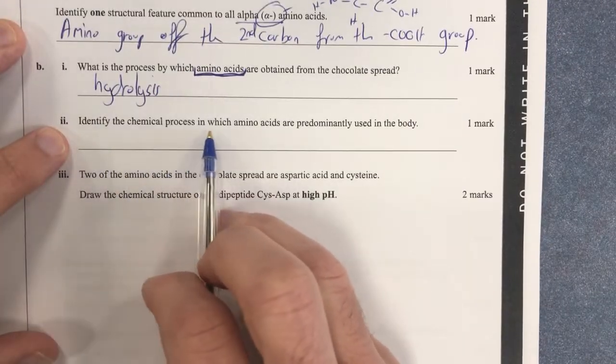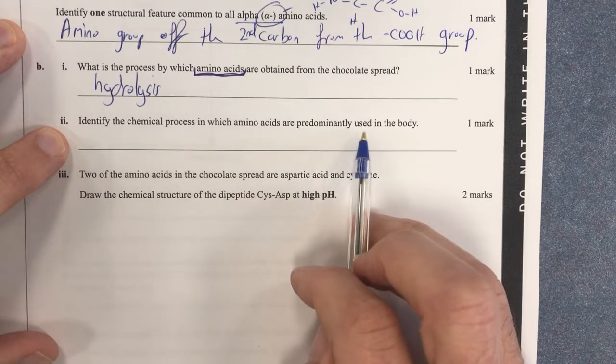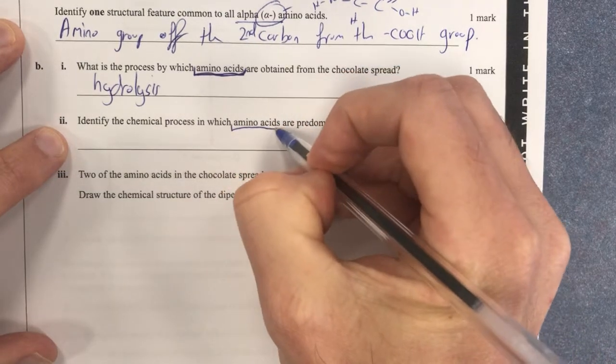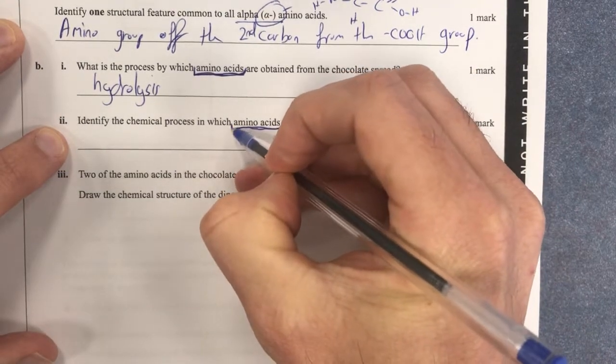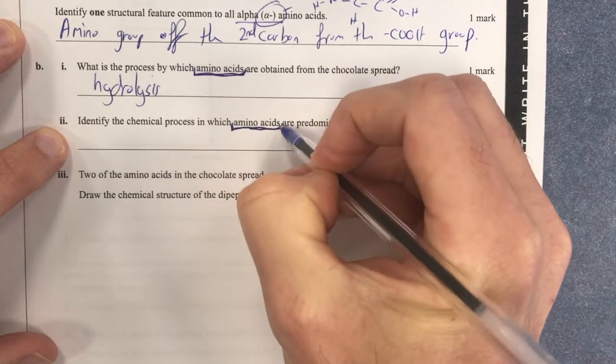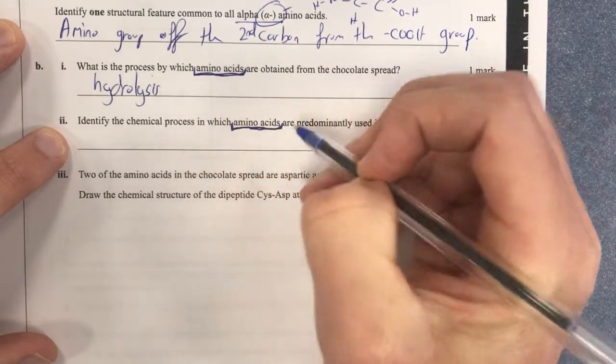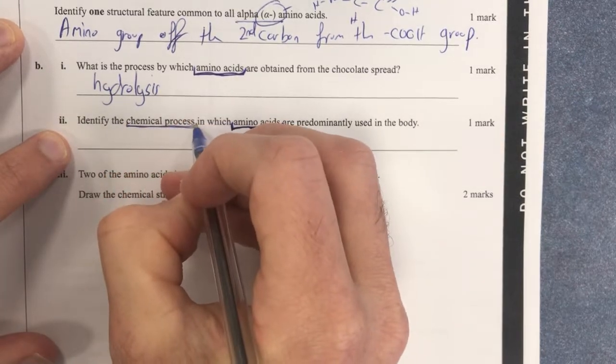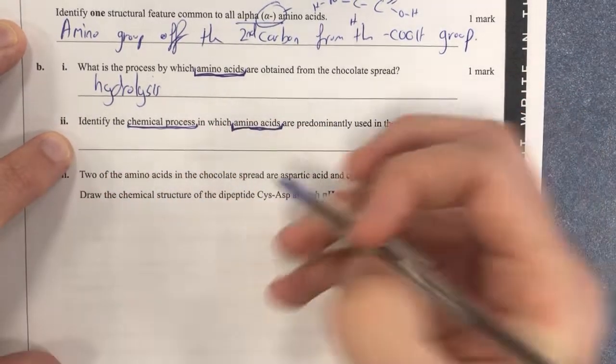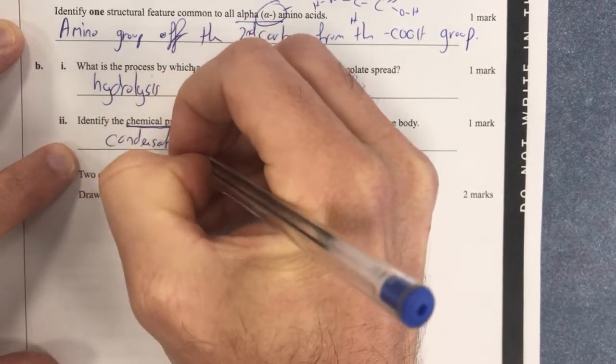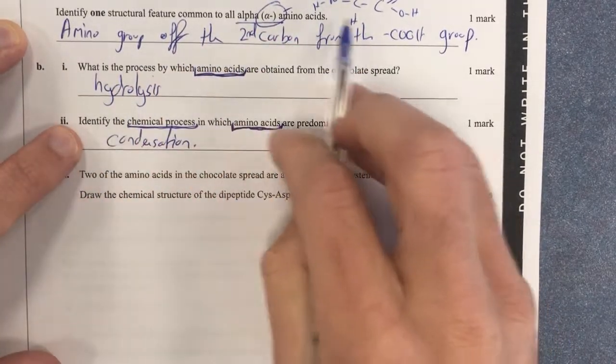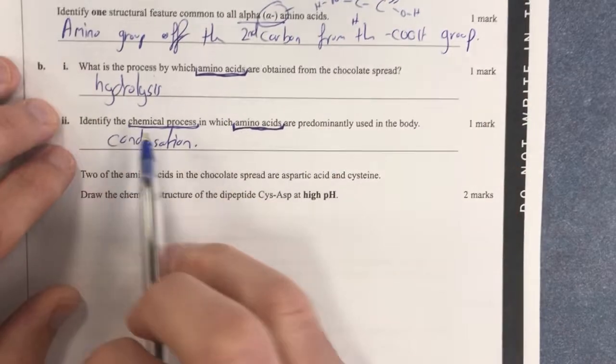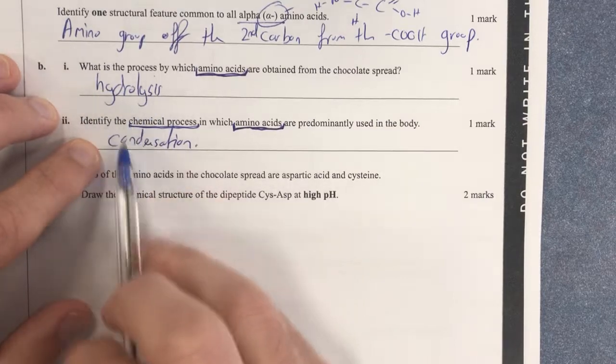Identify the chemical process in which amino acids are predominantly used in the body. How are they used? Well, amino acids are used to produce other proteins and hormones. So basically what they're doing is they are being connected together again. So what we should say here, it's a chemical process. So therefore how are amino acids connected together? It's by condensation. So they're obtained from proteins by hydrolysis where we break them apart, and then they're used by putting them back together through condensation.